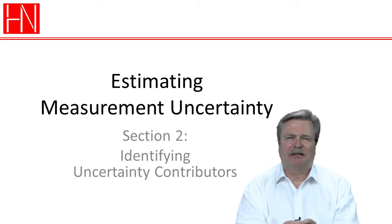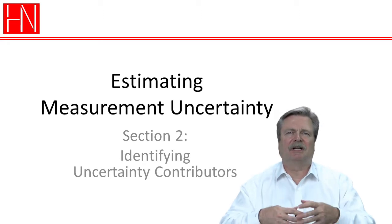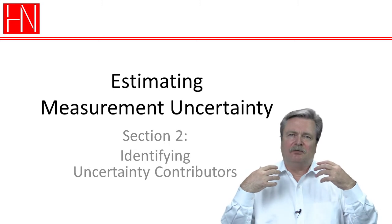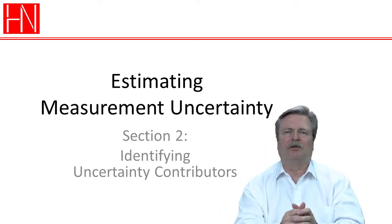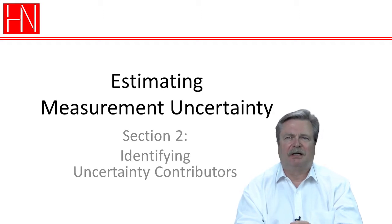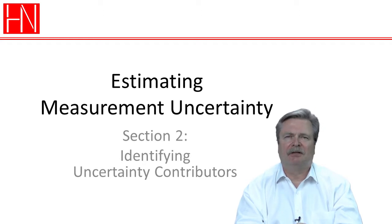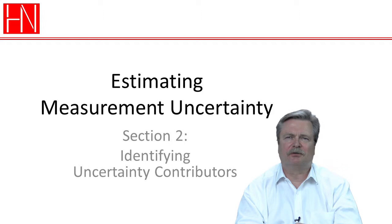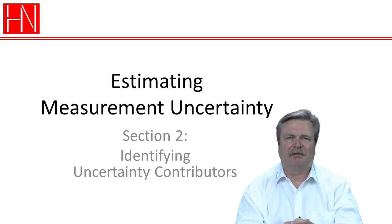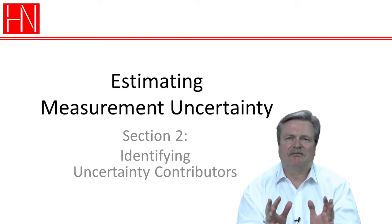This is the part that usually is not covered when people write about and teach estimating measurement uncertainty. It's as if we have this measuring process and we have this list of contributors and now we're going to do all the math. But my strong experience in working in the field and in having evaluated uncertainty budgets is that it is usually because there is a significant contributor missing if the uncertainty budget is not at least close to what it should be.